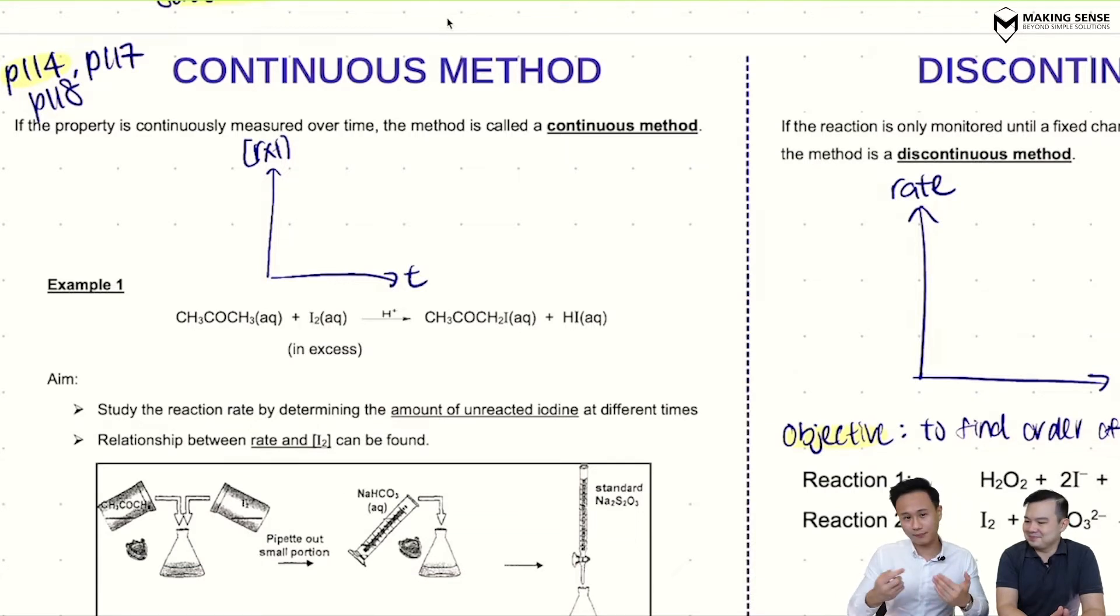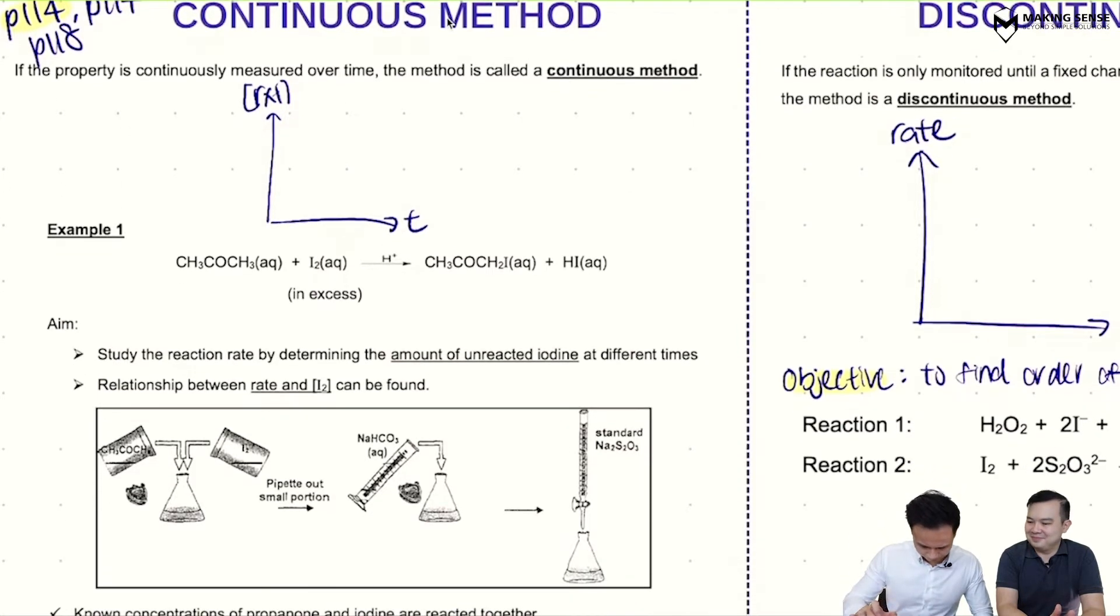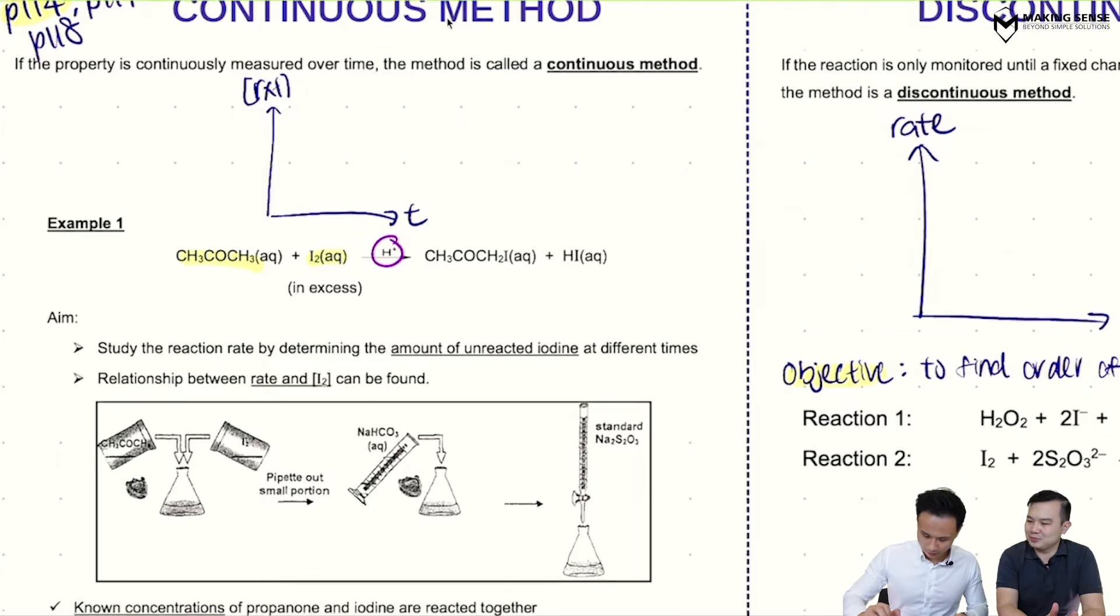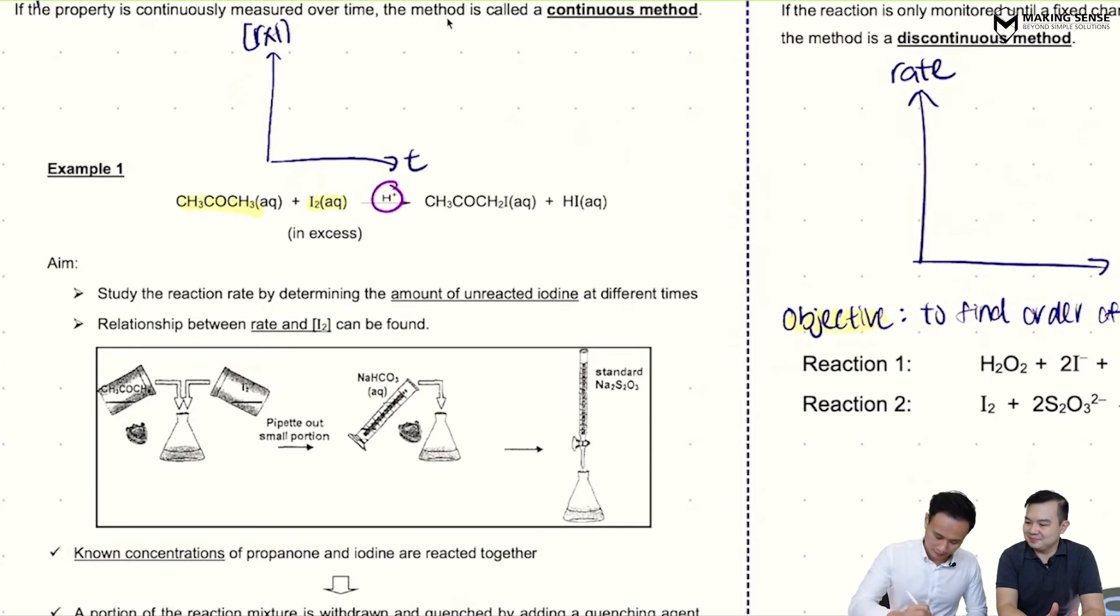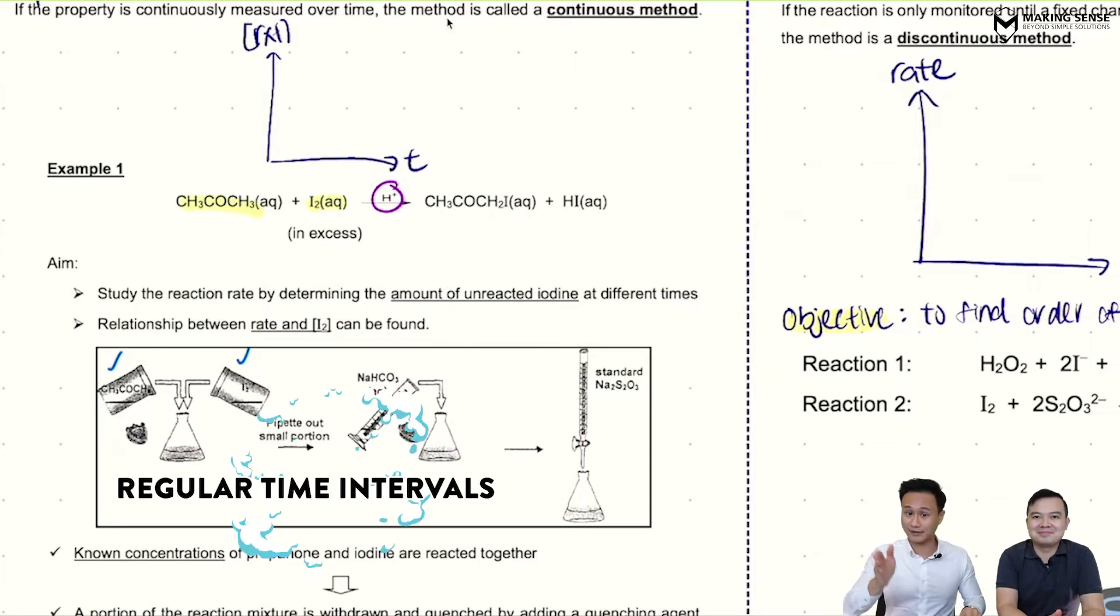So like what Mr. Leung said, this is kind of a practical experiment. So how do we apply this continuous method? Now, we're going to take example one. We are taking propanol and you're reacting with iodine in the presence of H-plus catalyst. So again, our aim here is to find the order of reaction with respect to iodine. So again, look at this setup here. We're going to add propanol. We're going to add iodine. Now remember, your goal is to find out how much concentration of unreacted iodine at regular time intervals.